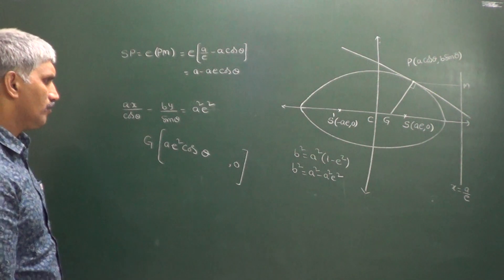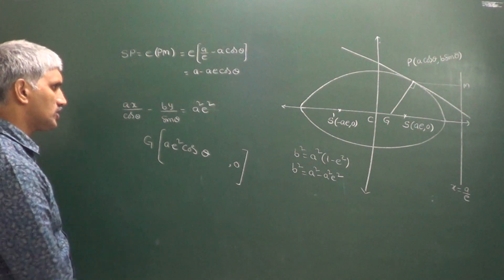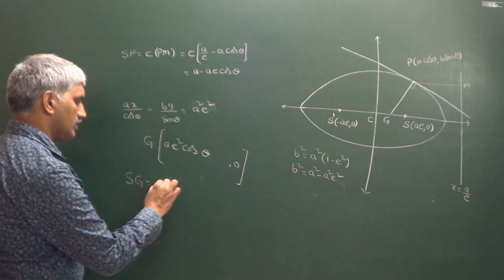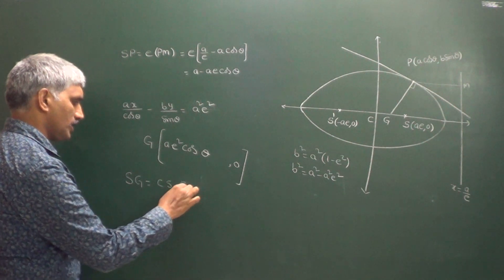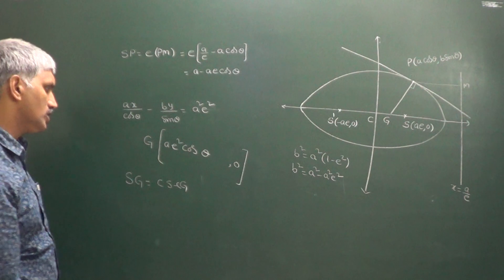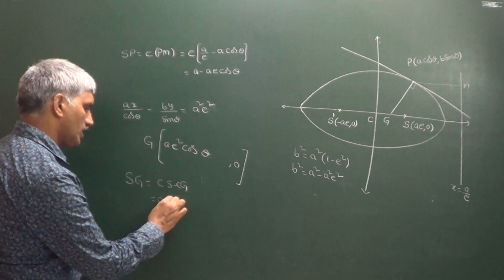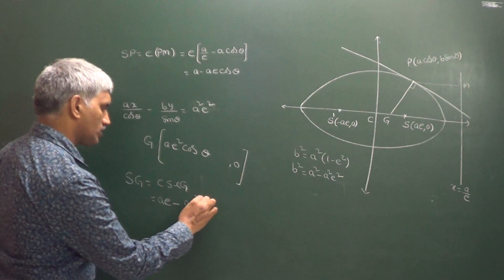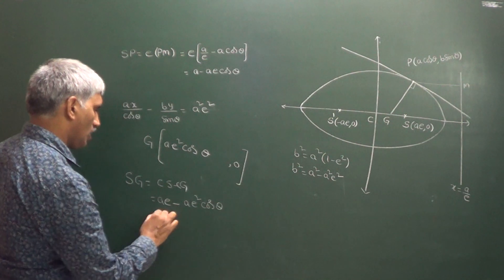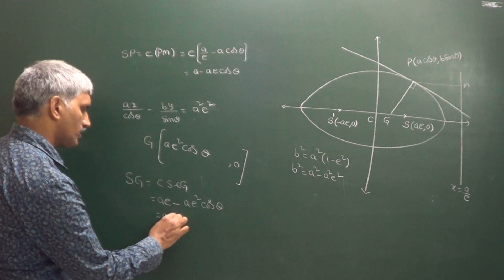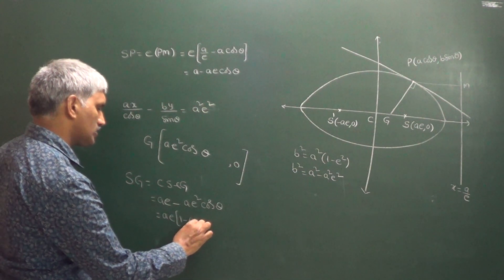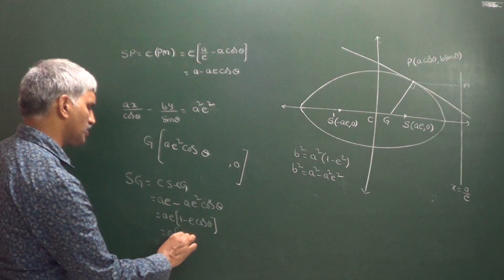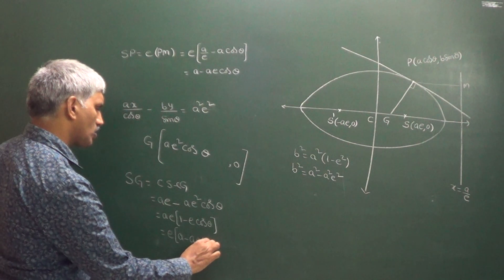Now we require SG. SG is nothing but CS minus CG, which equals AE minus AE² cosθ. Taking AE common, we get AE(1 - E cosθ).